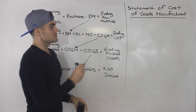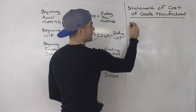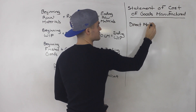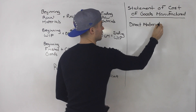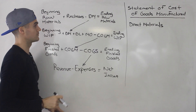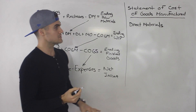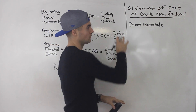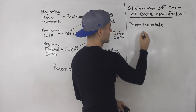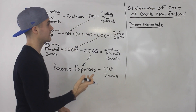The first thing on a statement of cost of goods manufactured is you're going to have your direct materials. We're pretty much going to be going down this flowchart over here. Sometimes direct materials will be shown as a single sum, a single amount. However, lots of times it's going to show the calculation of how to get that.